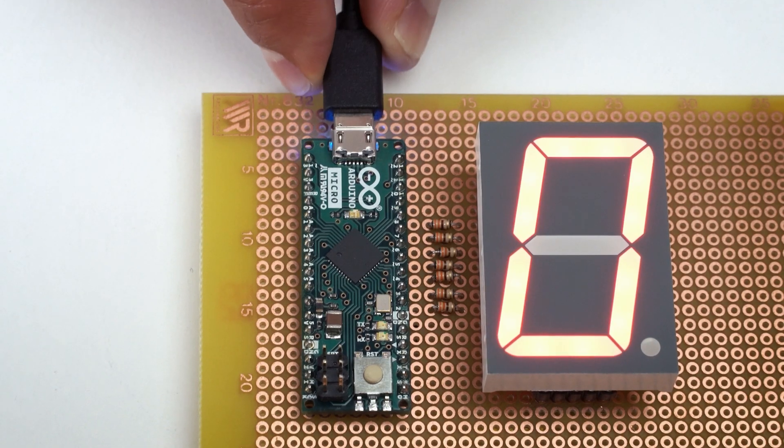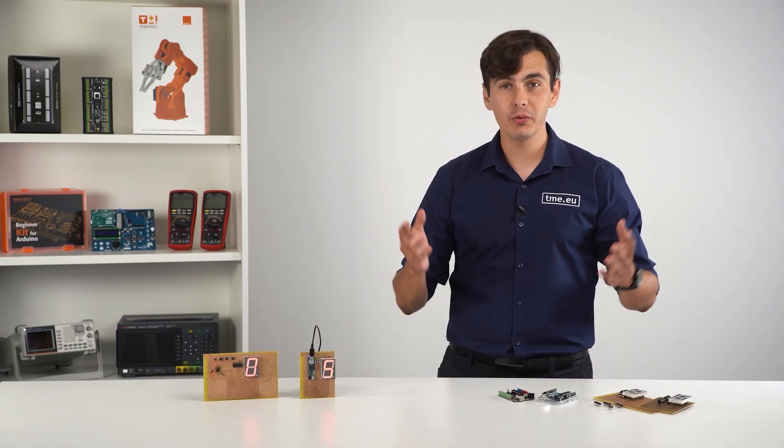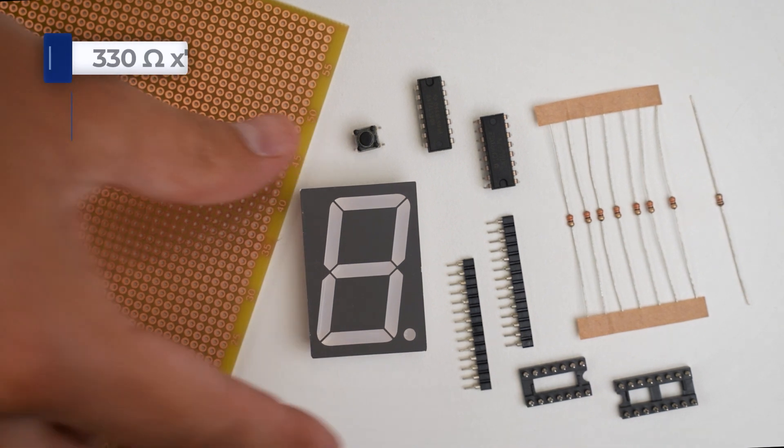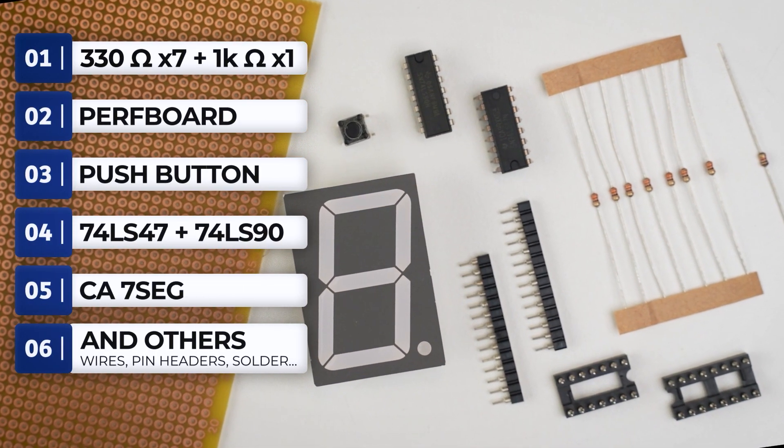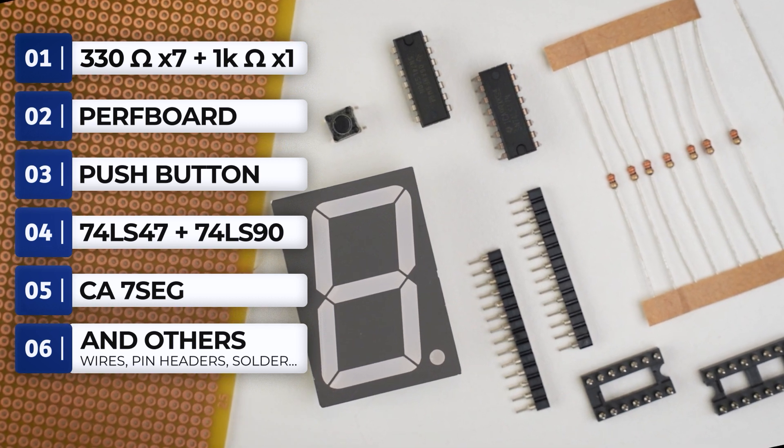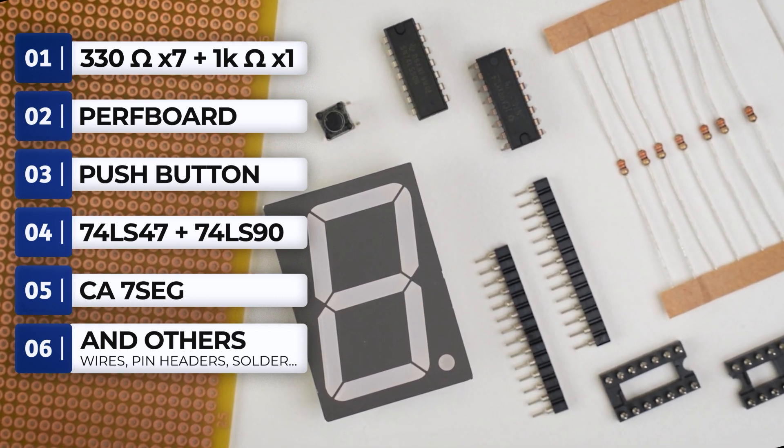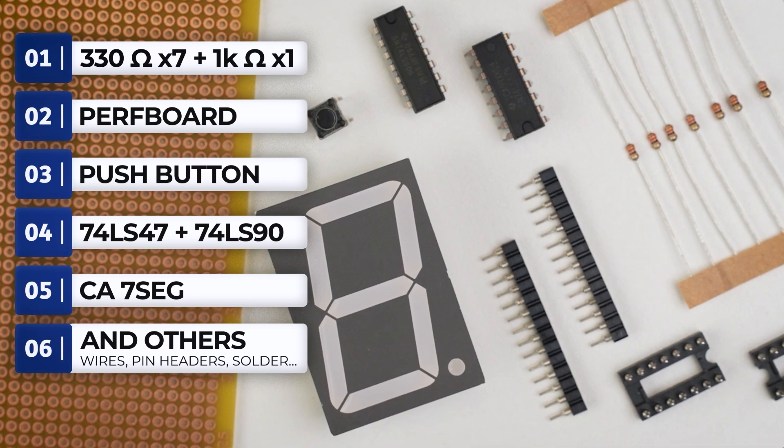Without an MCU, it's going to be horrible. It starts with the component list that consists of a common anode 7 segment display, the 74 LS90 decade counter, the 74 LS47 decoder driver, the push button and the resistors.